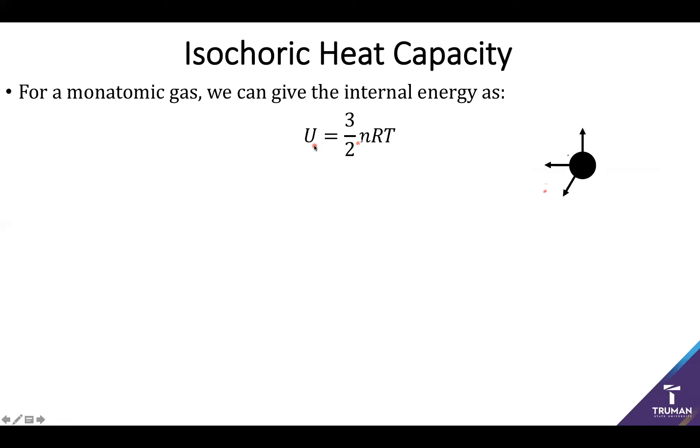This gives me an expression that relates my internal energy to my temperature. So what we can then do is take the first derivative. And when we do this, we find an isochoric heat capacity of three halves nR, because I can pull out the three halves nR as a constant and the dTs cancel out. So this is actually a fairly cool feature that we can, from first principles, predict the heat capacity of any monatomic gas.